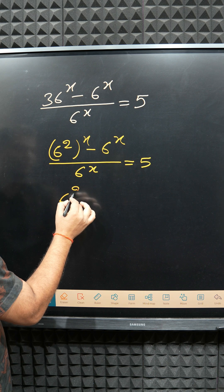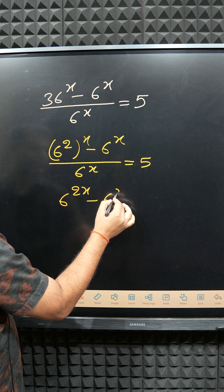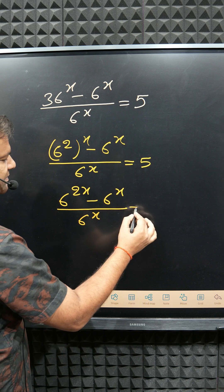Now this one is 6 to the power 2x minus 6 to the power x divided by 6 to the power x, this equals 5.